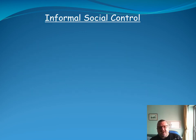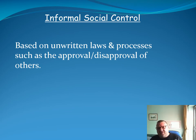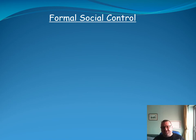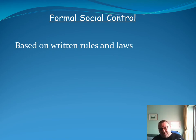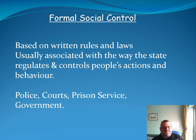There are many ways this can be achieved. You can have informal social control, which is based on unwritten laws and processes — things like the disapproval of others, influenced by family, friends, colleagues, the education system, religion, and the media. At the same time, we have formal social control, which is based on written rules and laws — the way the state regulates and controls our actions through the legislative process: the police, the courts, the prison service, and the government.